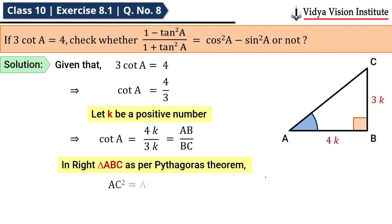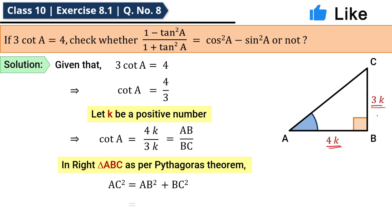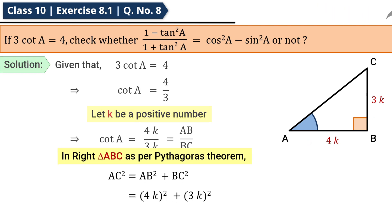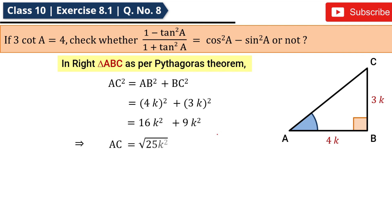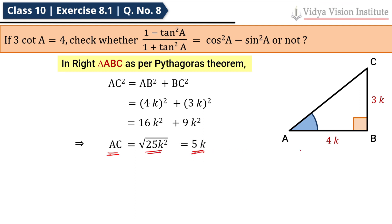Using the Pythagorean theorem: AC² = AB² + BC². AB = 4k and BC = 3k, so AC² = (4k)² + (3k)² = 16k² + 9k² = 25k². Therefore AC = √(25k²) = 5k.